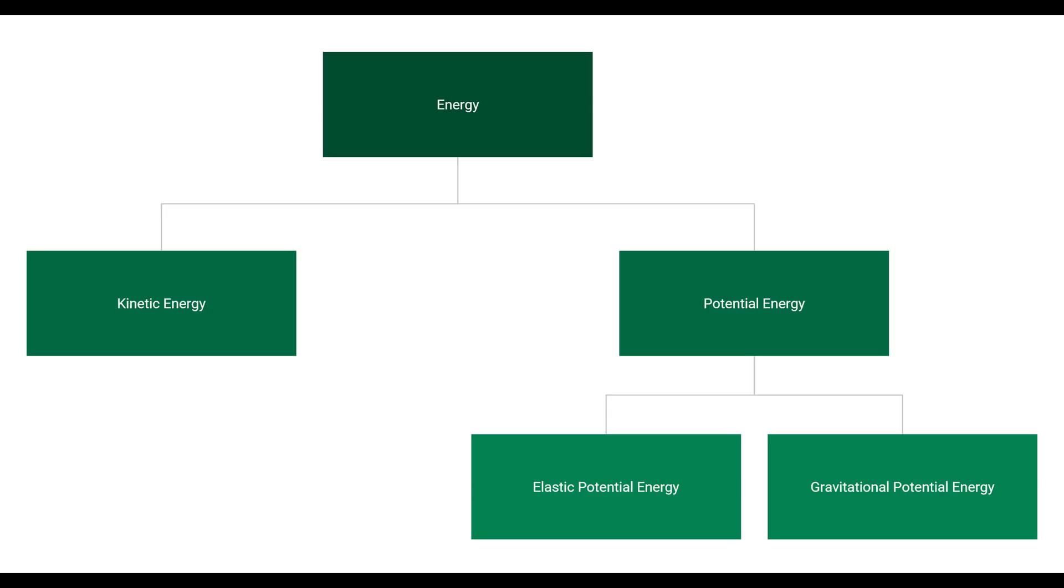Alright. So, here is our little graphic showing how these energies kind of fit in with each other. So, we have just in general, we have energy. Then we have kinetic energy. So, we have this branching. So, we have, remember I said, there's really those two types. There's kinetic energy, and then there's potential energy. And then I said, we can really narrow down potential energy a little bit further into elastic potential energy and gravitational potential energy.